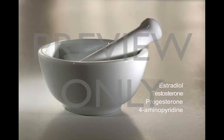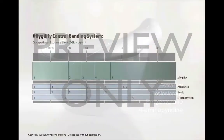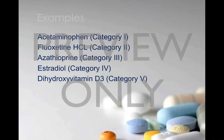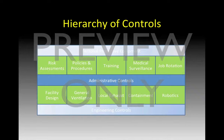We will demonstrate the importance of potent compound safety controls and practices, even at a small scale. We will discuss control banding and the differences in control banding systems, provide examples of compounds that have been placed into control band assignments, and discuss the hierarchy of controls necessary for preventing occupational exposures to potent compounds.